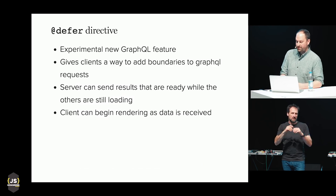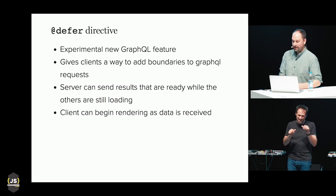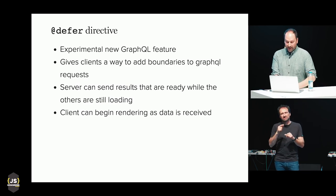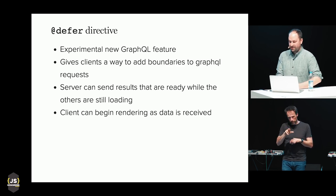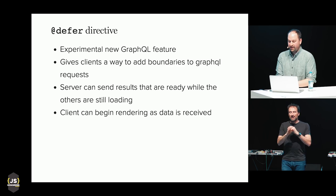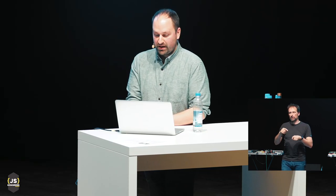There's another approach implemented as an experimental GraphQL directive called defer. It allows the GraphQL server to send data as soon as it's ready without waiting until the entire request is completed. Your client code can begin rendering as soon as it starts getting results from GraphQL, letting you decide what is the most important thing to show your users and make sure it's not delayed by anything else.